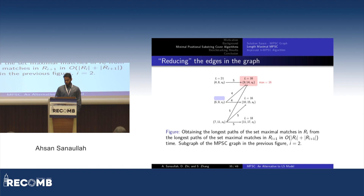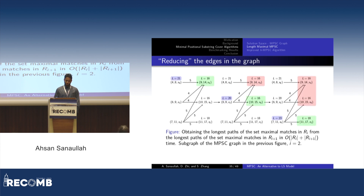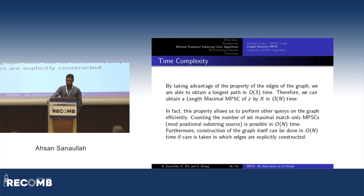For the first node, we manually check all longest paths. For every subsequent node, we avoid recomputing maxima from previous nodes. For example, the maximum for a new node is 16 matching the previous 16, then new nodes yield 18 while the old maximum is 16, so the new maximum becomes 18. The time complexity of this longest path algorithm is linear in the number of nodes, which is less than n. Overall, you can find a length-maximal MPSC in time linear to the number of sites and independent of the number of haplotypes. Using this property, the MPSC graph can also be built in the same time without explicitly constructing every edge.